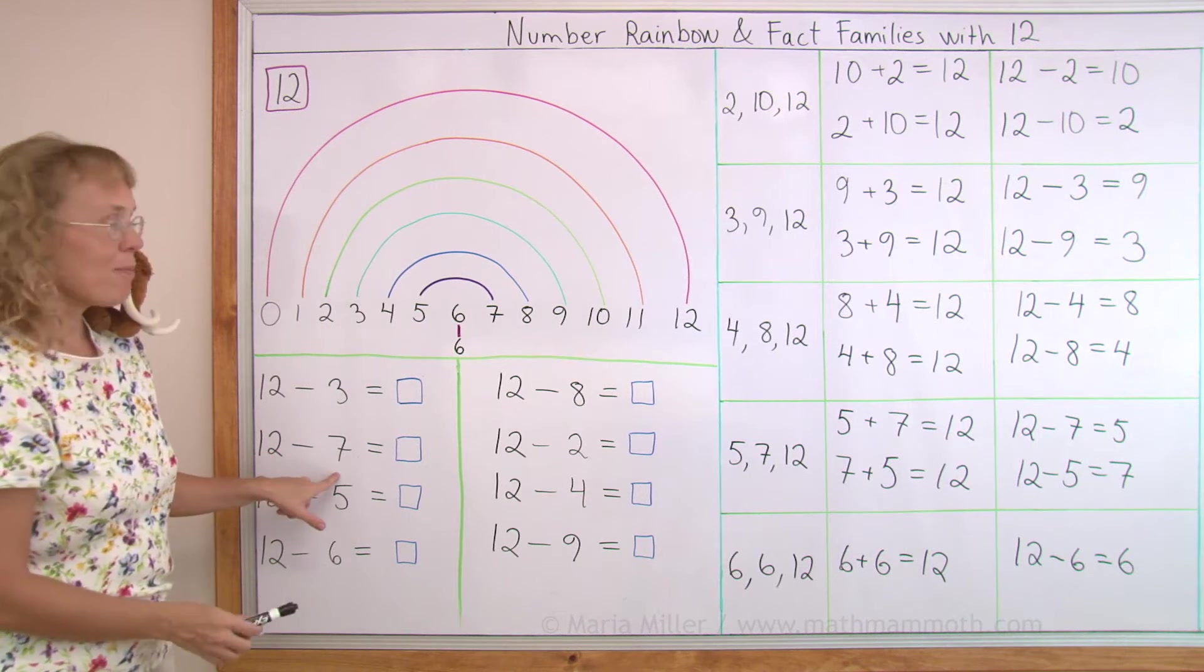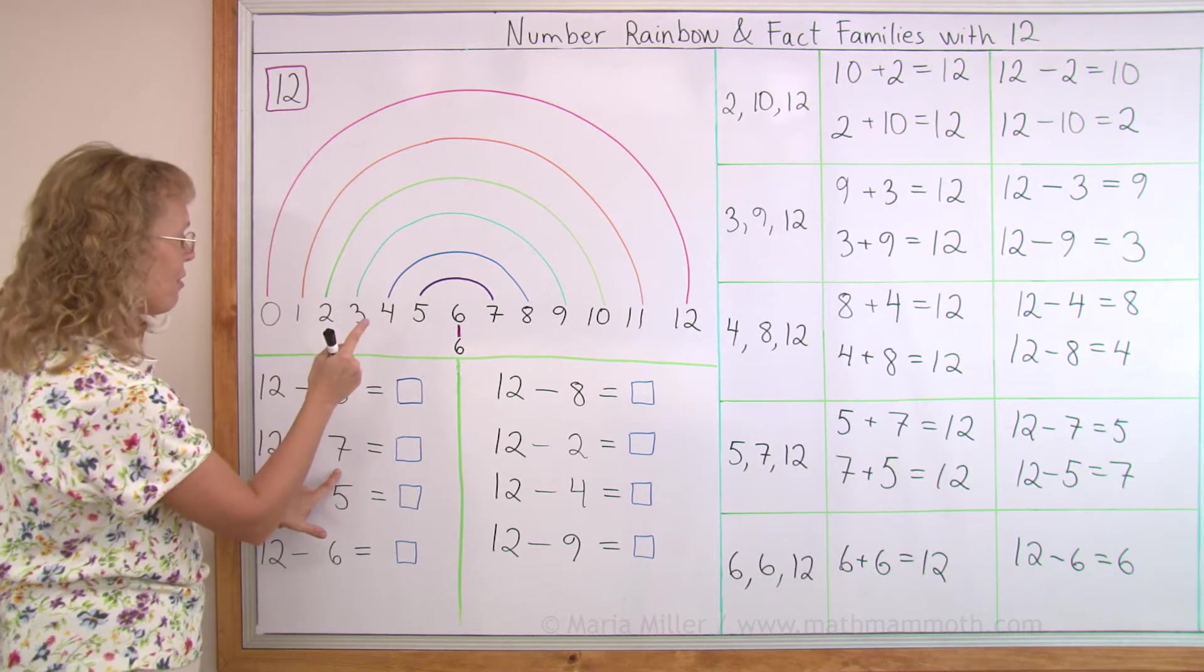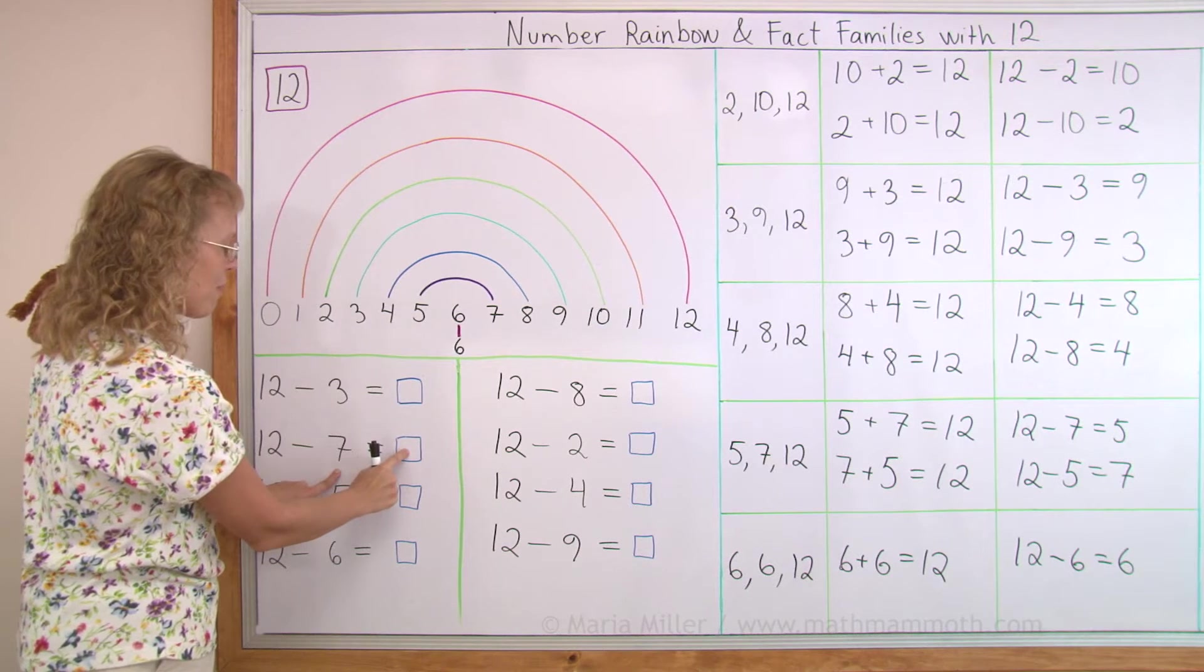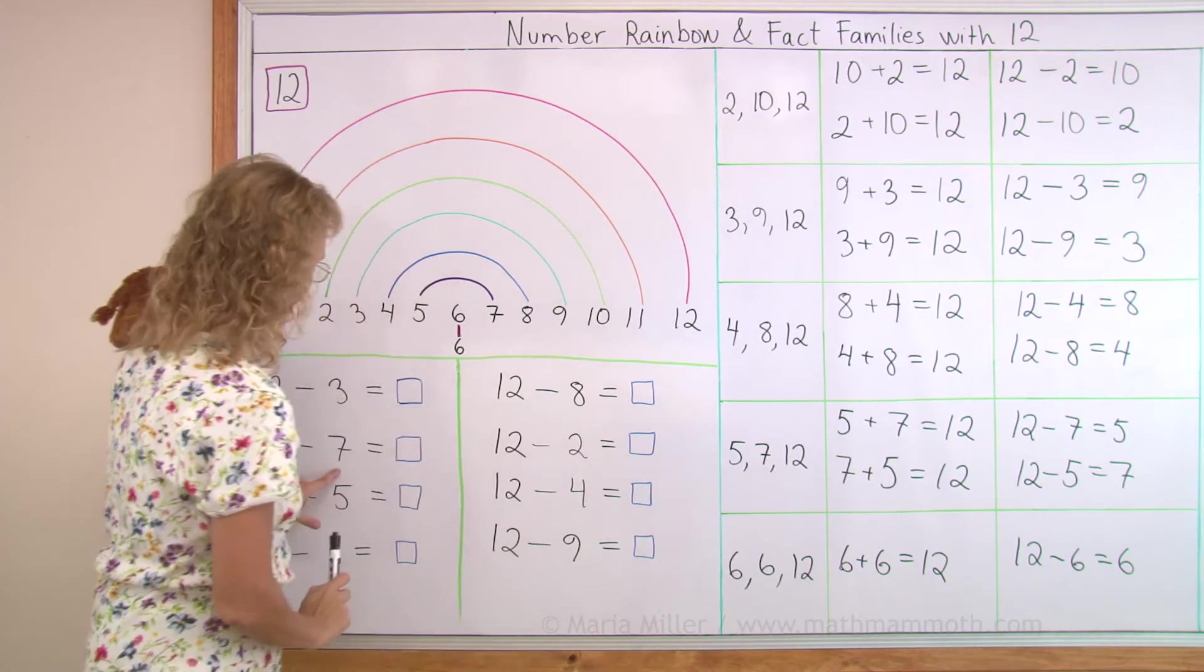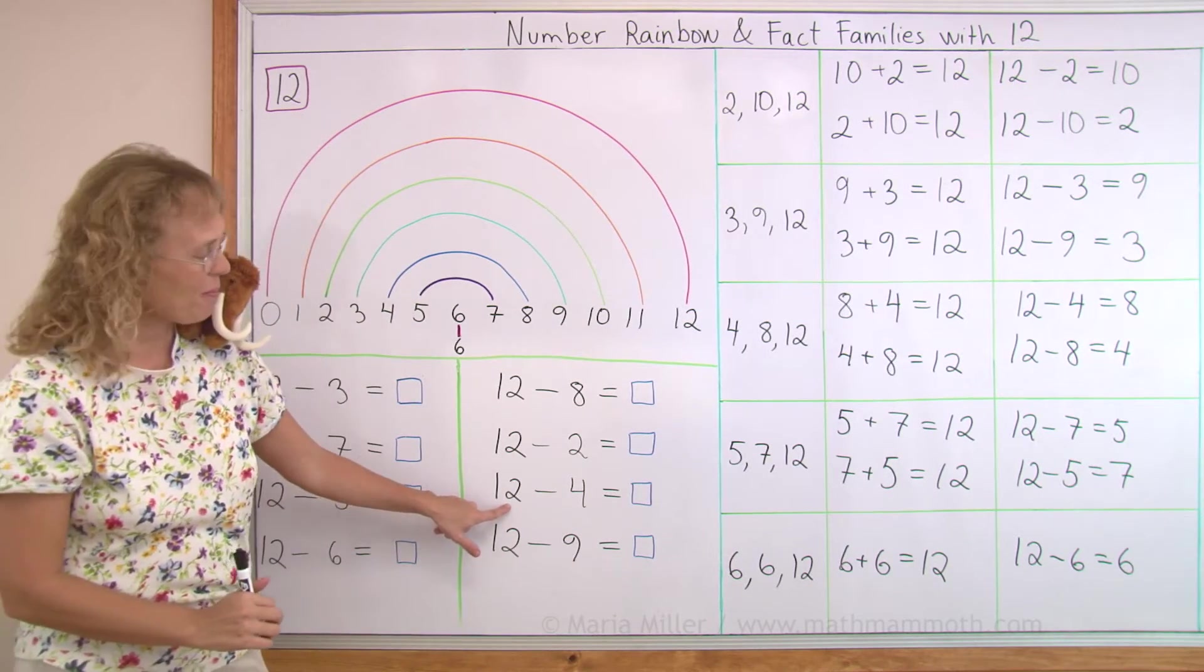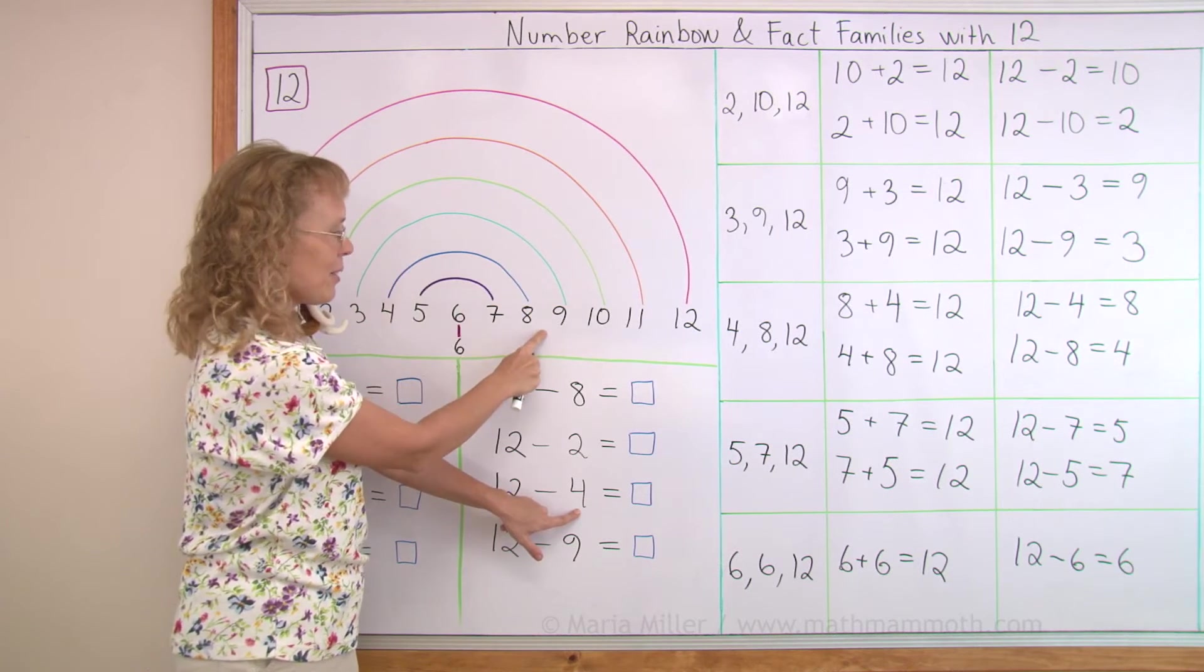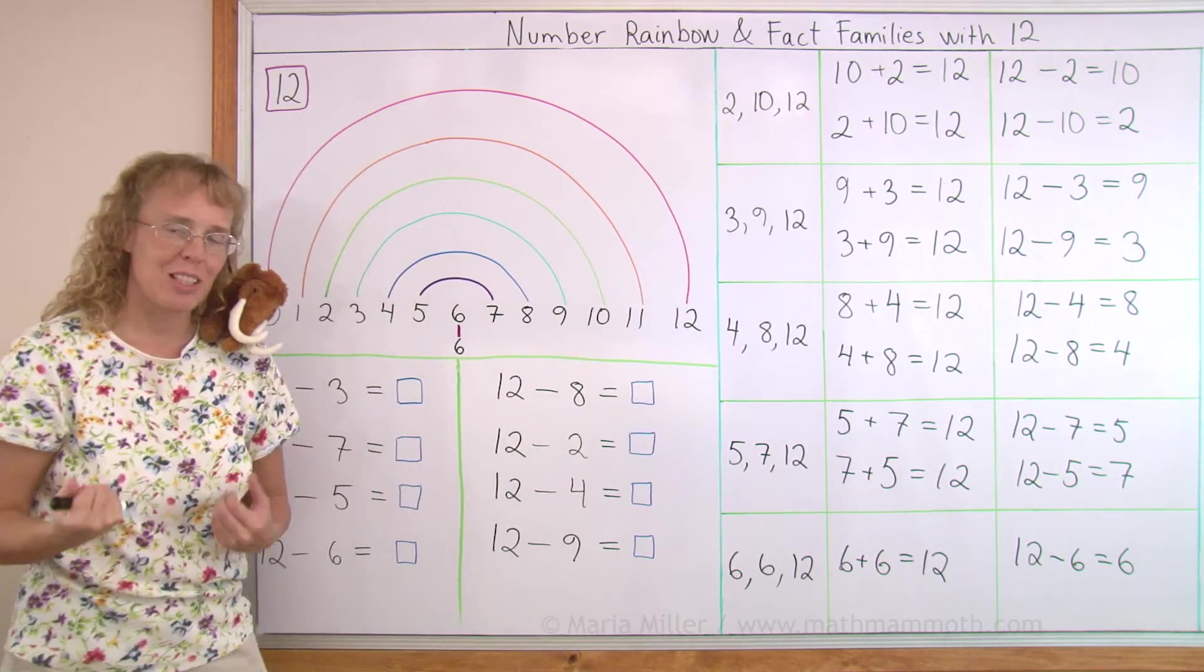12 minus 7. You can think of 7 and what number makes 12. You can think of the number rainbow. 7 and 5. 5 goes here. Or you can find the fact family. 7 and 5. And for example, let's take this one. 12 minus 4. Find 4's partner in the rainbow. 4 and 8. Or 4 and 8 over here. So that's how it works.